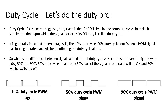What is the connection between PWM and duty cycle? When a PWM signal has to be generated, one has to mention the duty cycle alone — the duty cycle is going to be the base. When I say 10% duty cycle, it means the signal is expected to be ON for 10% of the time in a complete cycle.